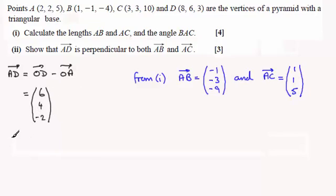So therefore, if I do AD dotted with the vector AB, then in the usual way what we're going to have is 6 times minus 1 which is minus 6, and then we've got 4 times minus 3 which is minus 12, and then we've got minus 2 times minus 9 which is plus 18. And as hoped, we end up with 0. So that's proved that AD is perpendicular to AB.